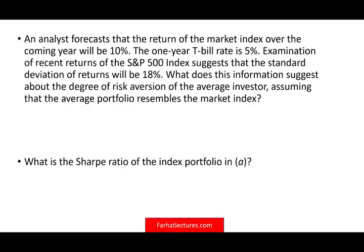Let's take a look at the first example. An analyst forecasts that the return of the market index over the coming year will be 10%. The one-year T-bill rate is 5%, which represents the risk-free rate. The market portfolio, or market index, represents the market. Examination of the return of the S&P suggests that the standard deviation is 18%. What does this information suggest about the degree of risk aversion of the average investor, assuming the average portfolio resembles the market index?